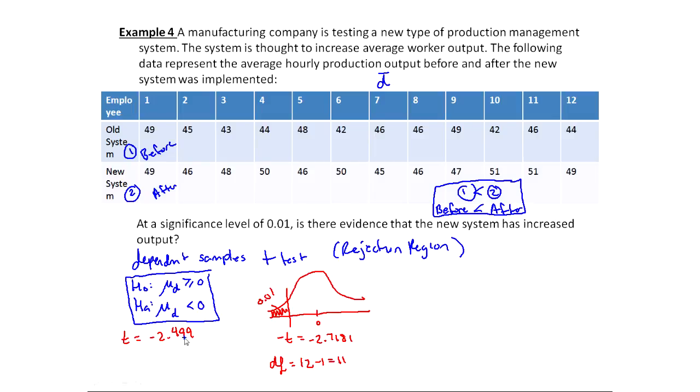As you can see here, my t-test statistic doesn't quite make it. If I was to look at where this is on the graph, it's maybe right about here. It's not quite in the rejection region. So this would be a fail to reject H naught. If I fail to reject H naught, I can say no, there is no evidence the new system has increased output. You can calculate the test statistic by hand, but it's going to require quite a bit of calculation because you'll have to find each of the differences. You must know how to do this in the calculator, otherwise it's going to be very difficult for you.